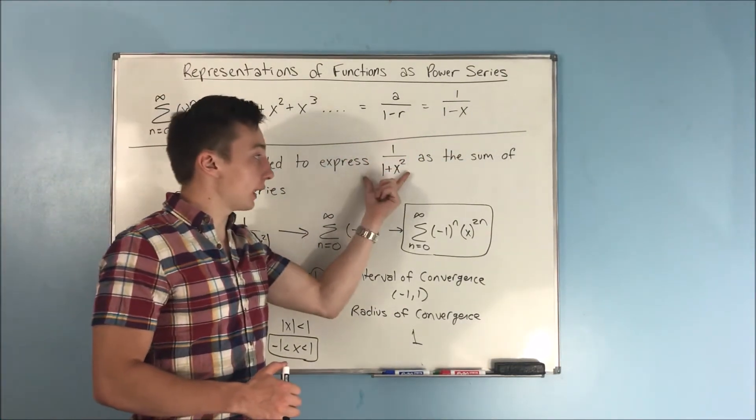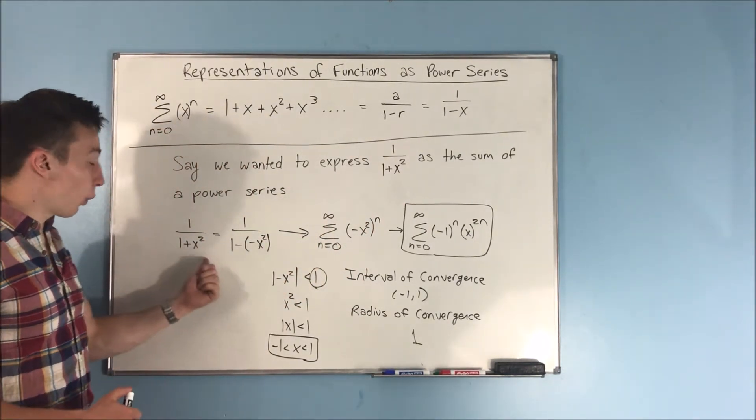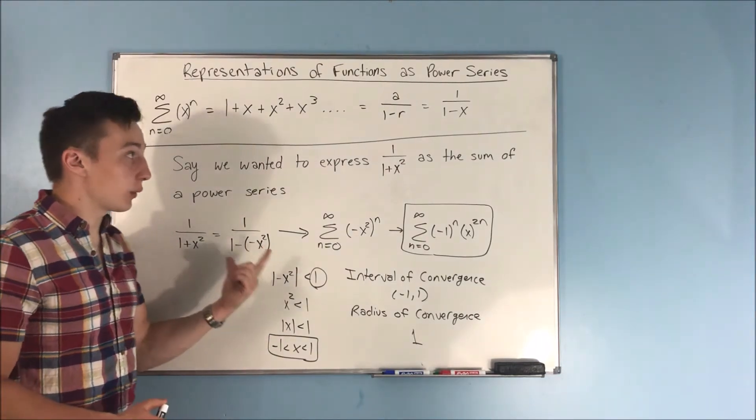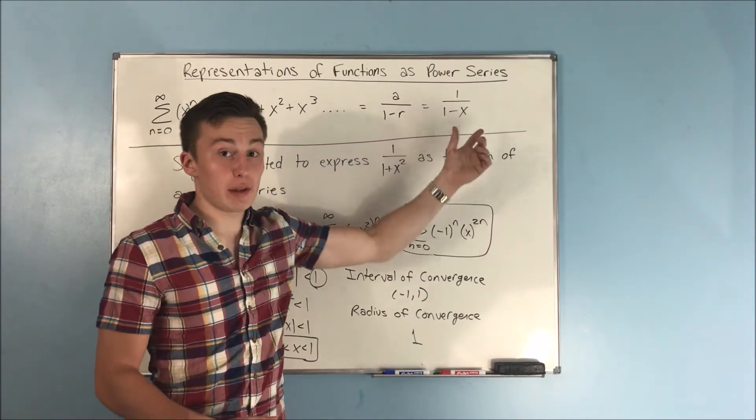We did an example with 1 over 1 plus x squared, and all we did here was, instead of writing it as 1 over 1 plus x squared, we wrote it as 1 over 1 minus a negative x squared to get that form, that 1 over 1 minus something.